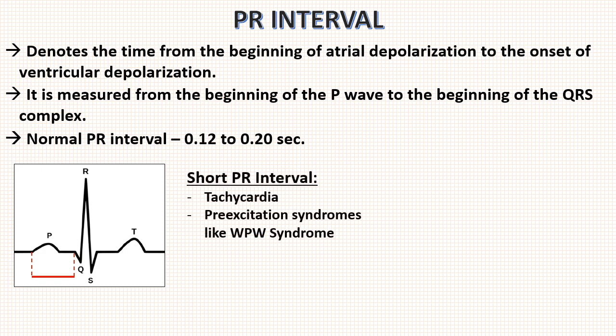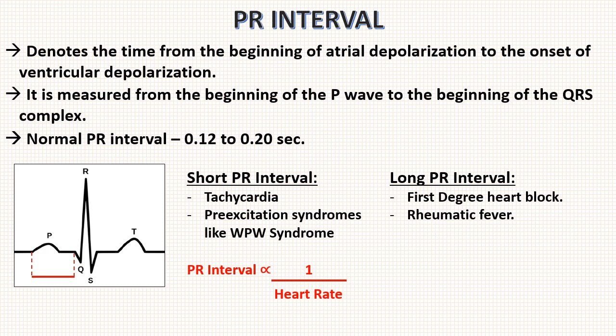The causes for short PR interval can be tachycardia and pre-excitation syndromes like WPW syndrome. For clinical purpose, just remember PR interval is inversely related to heart rate. And causes of long PR interval are first degree heart block and rheumatic fever.